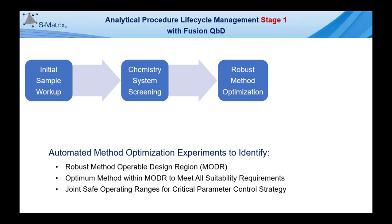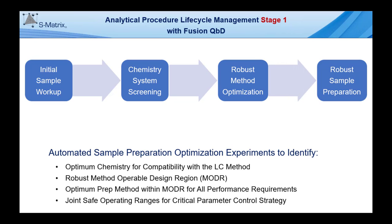This leads through robust method optimization, where Fusion QBD enables you to identify the robust method operable design region, or MODR, the optimum method within the MODR which meets all system suitability performance requirements, and the joint safe operating ranges for the critical parameters which can be transferred to a control strategy. In addition, Fusion QBD supports robust sample preparation method development. These automation experiments enable you to identify the optimum chemistry for compatibility with the LC method, the robust method operable design region of the sample preparation method, the optimum prep method within the MODR for all performance requirements, and the joint safe operating ranges for the critical parameters that can be transferred into a critical parameter control strategy.